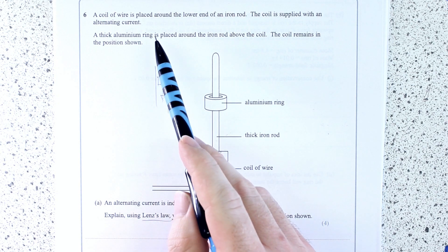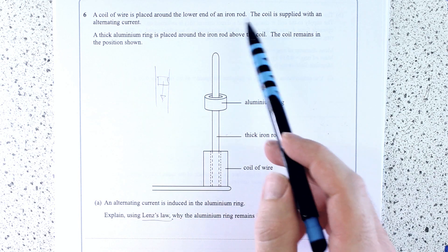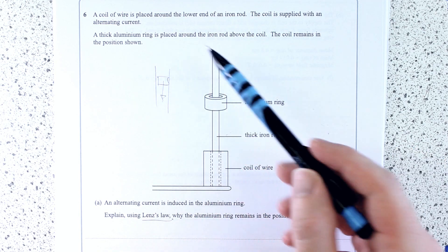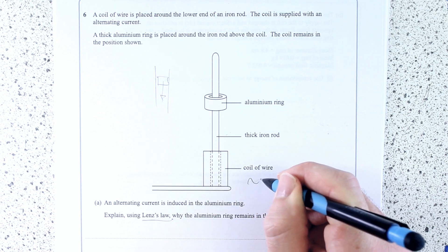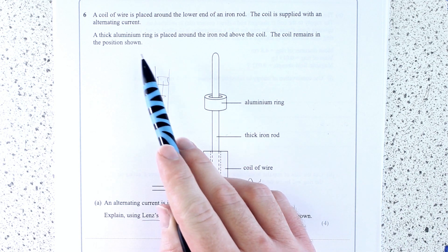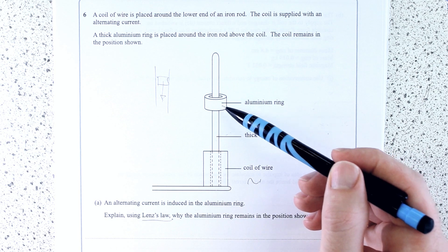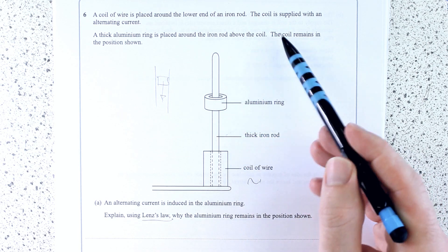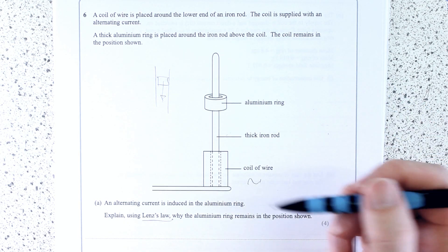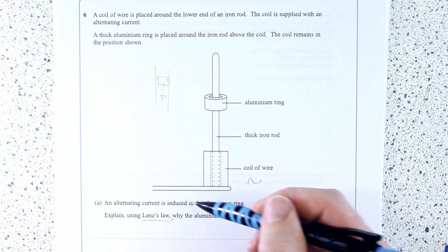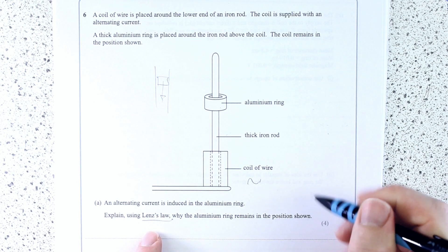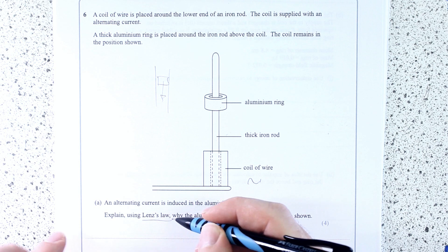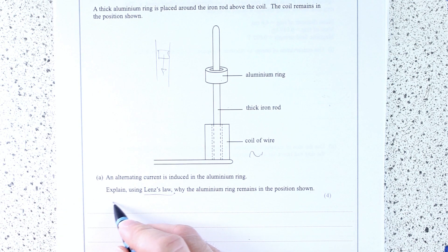So a coil of wire is placed around a lower end of an iron rod. A coil is supplied with an alternating current. A thick aluminum ring is placed around the iron rod above the coil. The coil remains in the position shown. An alternating current is induced in the aluminum ring. Explain, using Lenz's law, why the aluminum ring remains in the position above. So actually told it's about Lenz's law, so let's go ahead and get that.